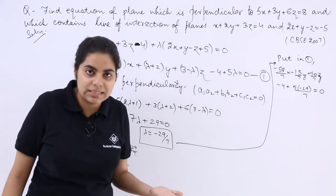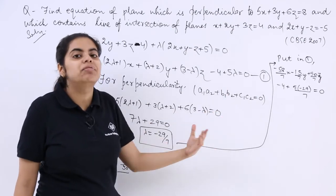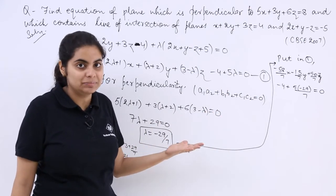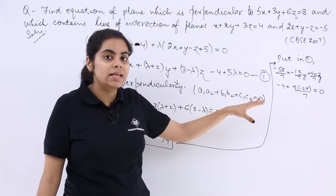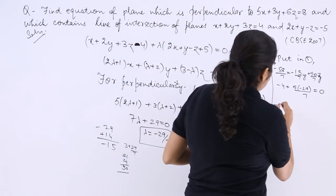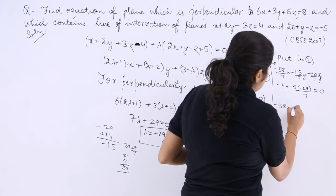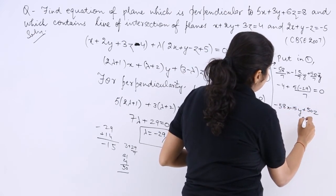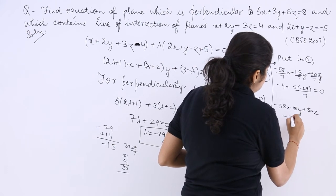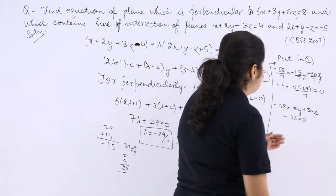What we can do is we can simply take the LCM 7 and we will find the required equation of a plane. The equation is minus 58 x minus 15 y plus 50 z minus 173 probably is equal to 0.